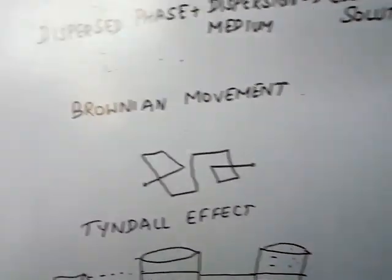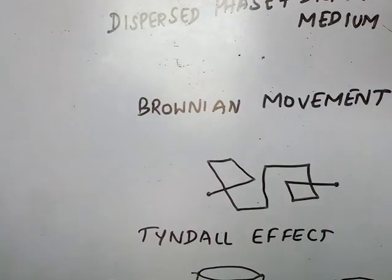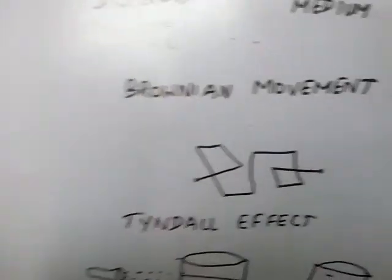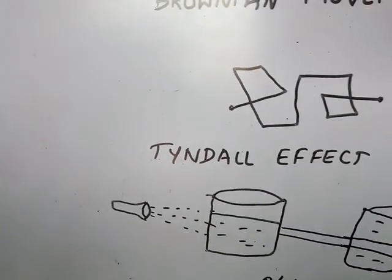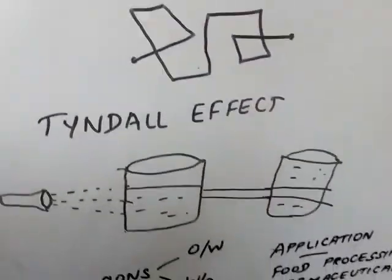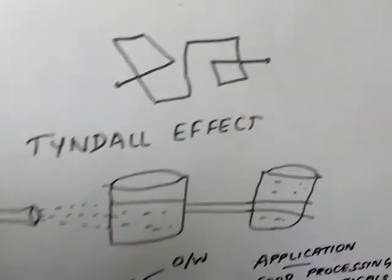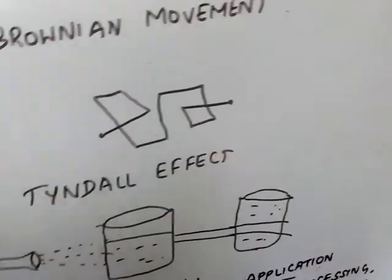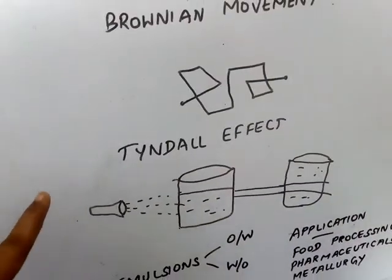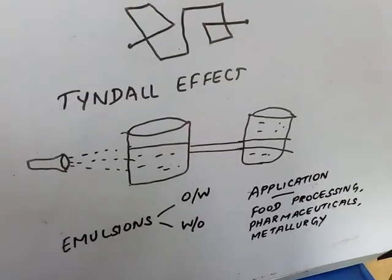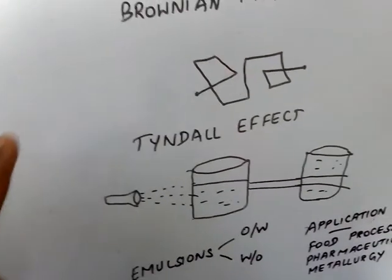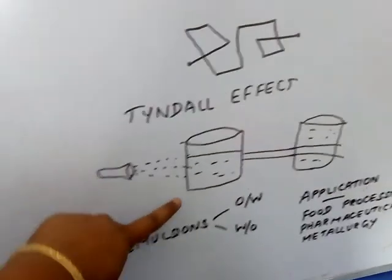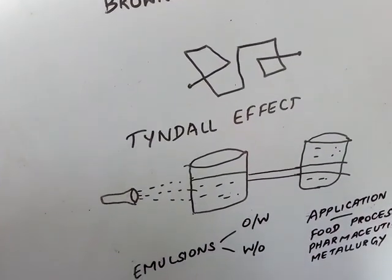Next important property is Tyndall effect. When we are saying about the Tyndall effect, a beam of light is allowed to pass through this colloidal solution. So when a beam of light is allowed to pass through this colloidal solution, that path of the beam becomes visible. You are able to see the path of the light. So this property we are saying it as Tyndall effect. This Tyndall effect property only we are using it in cinema hall projector due to the scattering of light by the colloidal particles.